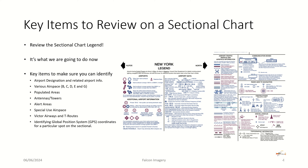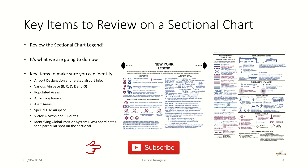Key items you want to make sure you can identify for a checkride or just your own needs for flying: be able to identify the airport designators and related airport information, the various types of airspace, populated areas, antennas and towers — especially the really tall ones — alert areas, special use airspace, Victor Airways, GPS or T routes, and GPS coordinates for a particular spot on a sectional.